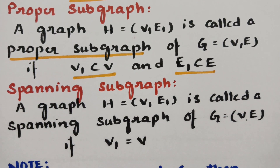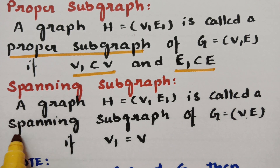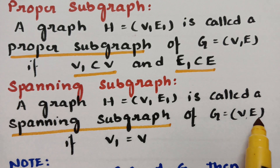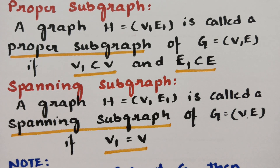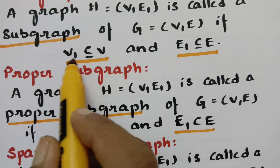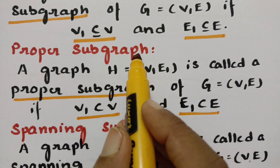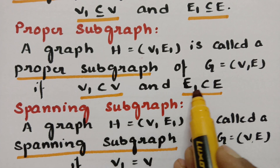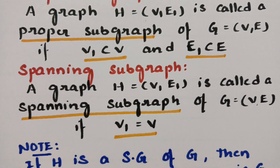What is a spanning subgraph? A graph H is called a spanning subgraph of the main graph G if V1 equals V. So: subgraph if V1 ⊆ V and E1 ⊆ E; proper subgraph if V1 ⊊ V and E1 ⊊ E; spanning subgraph if V1 = V.